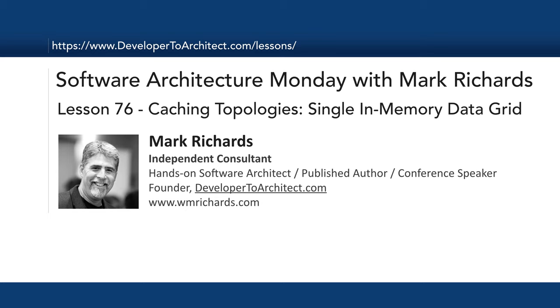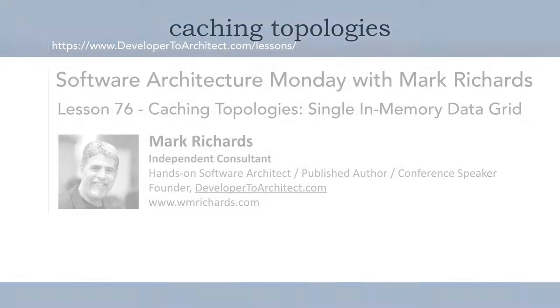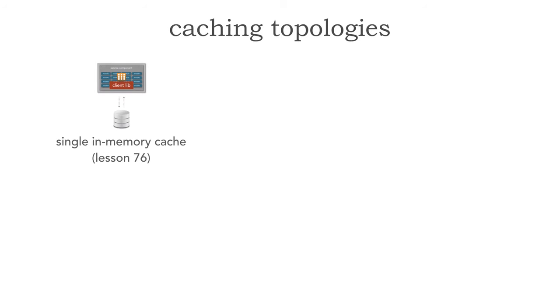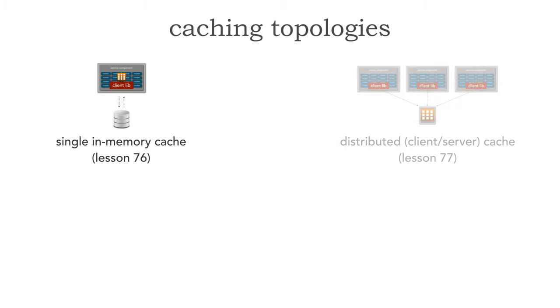In today's lesson number 76, we'll take a look at various caching topologies and specifically within this lesson, the single in-memory data grid as the first caching topology. We'll be taking a look at four various caching topologies in the next four lessons.